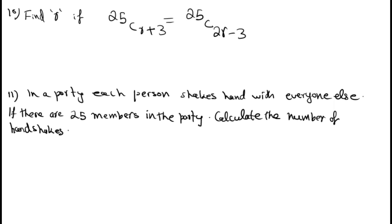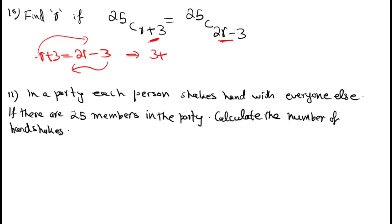Tenth problem: Find R if 25C(R+3) = 25C(2R−3). Two conditions apply: either R+3 = 2R−3, or N = (R+3) + (2R−3). Using the first condition: R+3 = 2R−3 → 3+3 = 2R−R → R = 6.